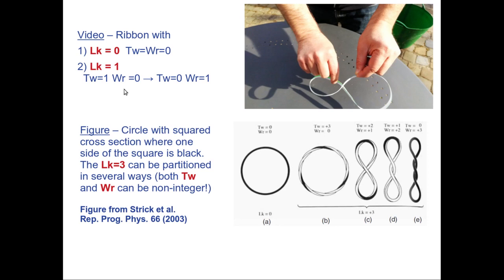This is also shown in this figure with slightly more complicated situations. I have a circular twistable polymer closed into itself with a square cross-section. If I cut it open, the top side of the square section is painted black and the sides are painted white. In case A, the linking number is zero — the two strands (black top and bottom) run parallel with no twist and no writhe. I cut this molecule open and make three turns instead of one, then seal it back black-to-black. This imposes a linking number equal to three.